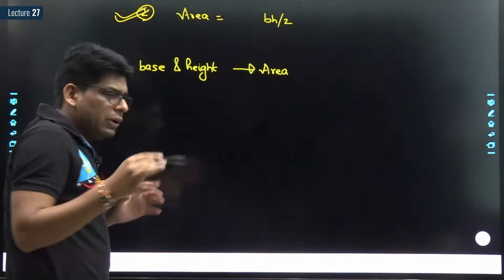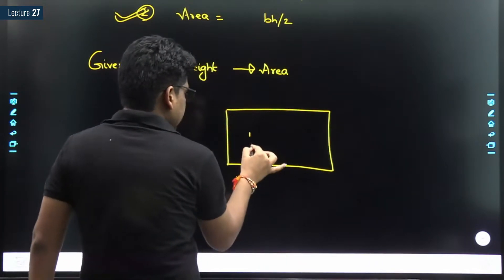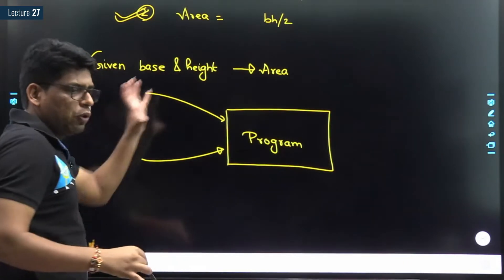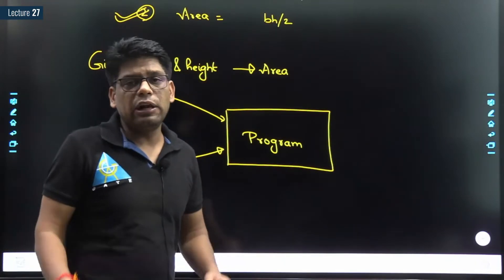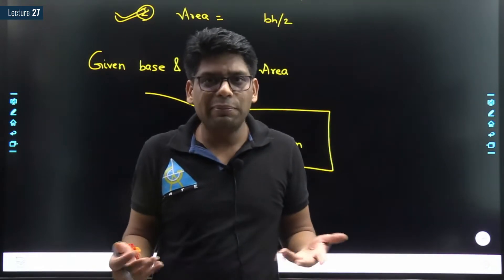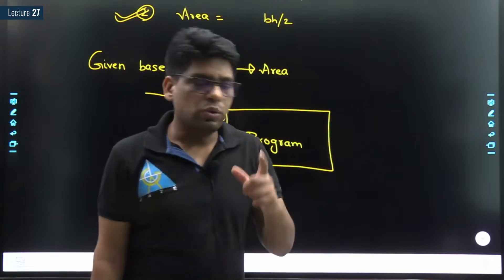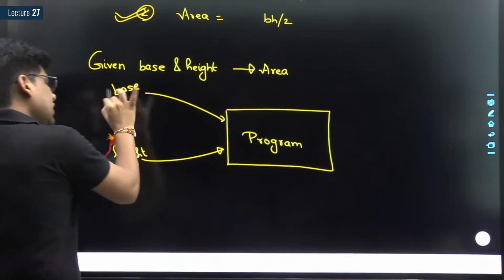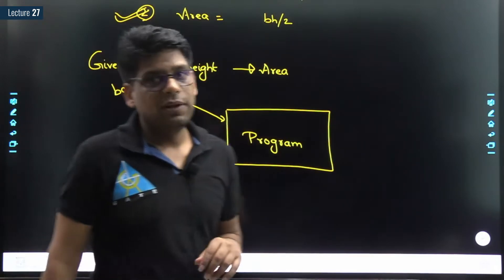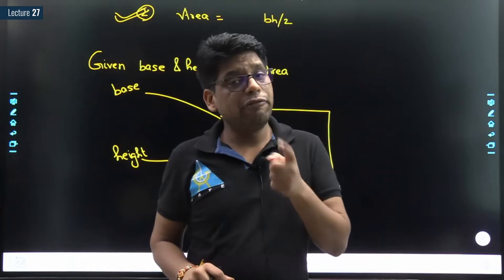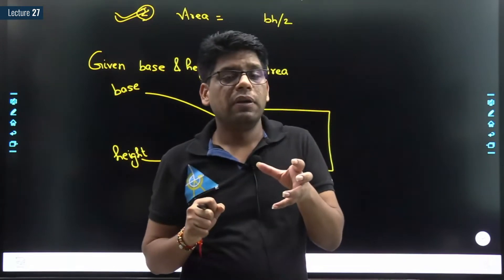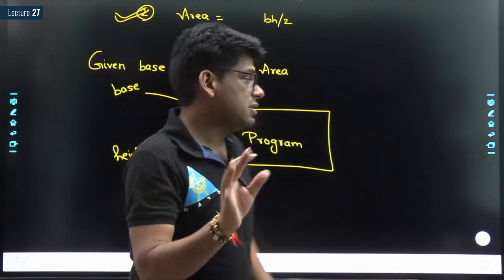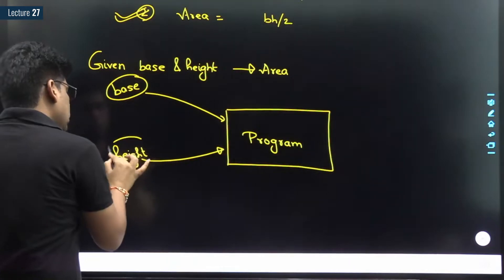To understand the scenario - if this is my program, what inputs do we need to provide? To calculate area, you need base and height. So the user will provide two inputs from the keyboard. That means we need to store that data in our program inside variables - we must have two variables to store the base and height.